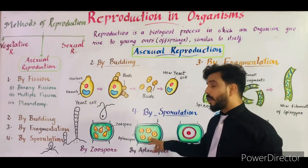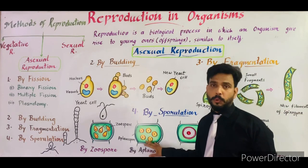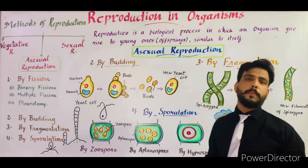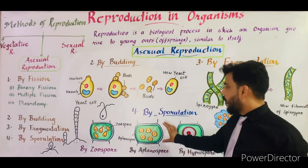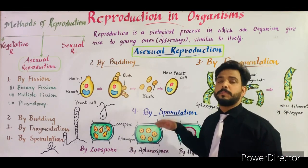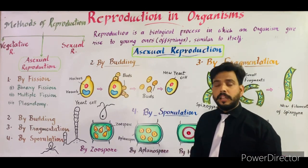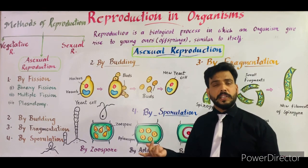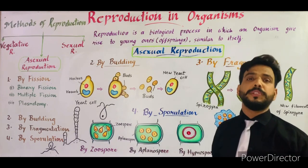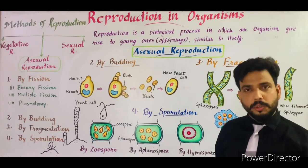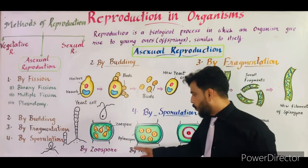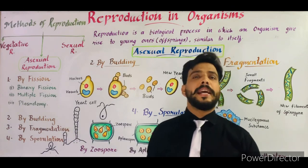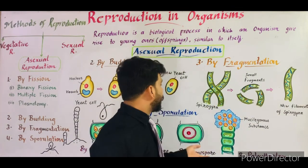Each segment forms a rounded structure known as the aplanospore. When aplanospore formation is complete and the cell matures, the cell ruptures and the aplanospores become free. Each aplanospore germinates under favorable conditions and gives rise to a new filament of Ulothrix. This type of reproduction is known as reproduction by aplanospore.